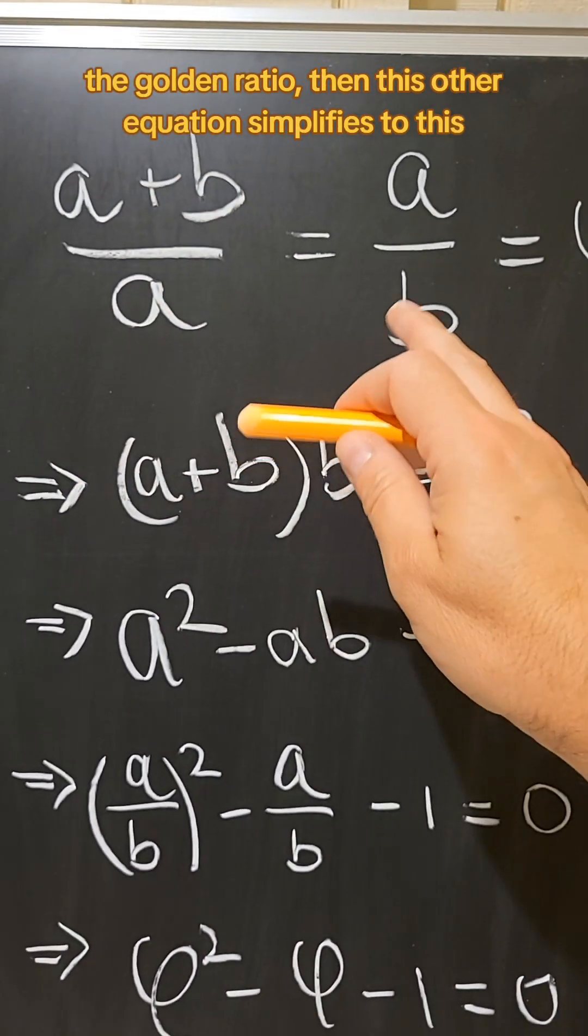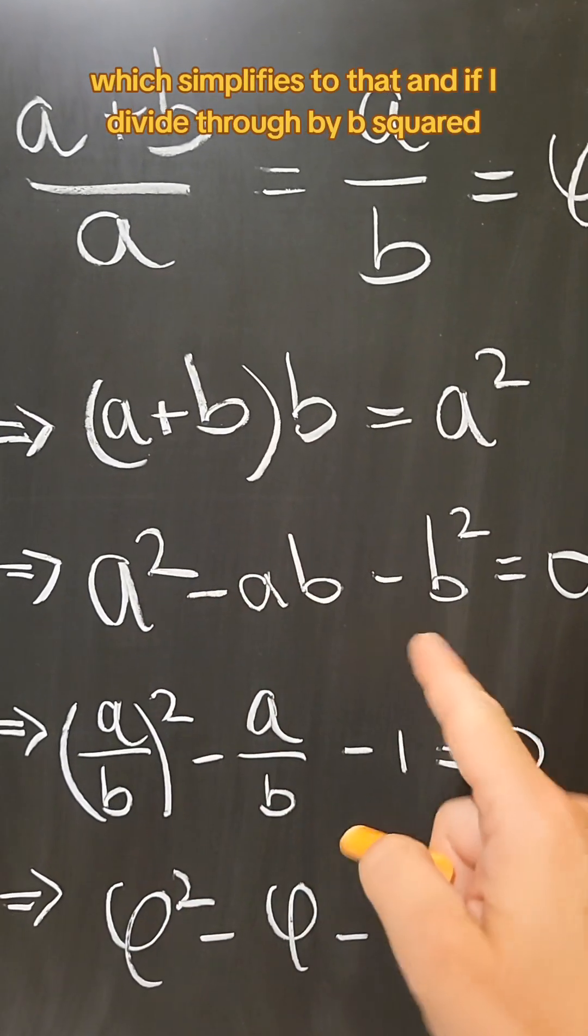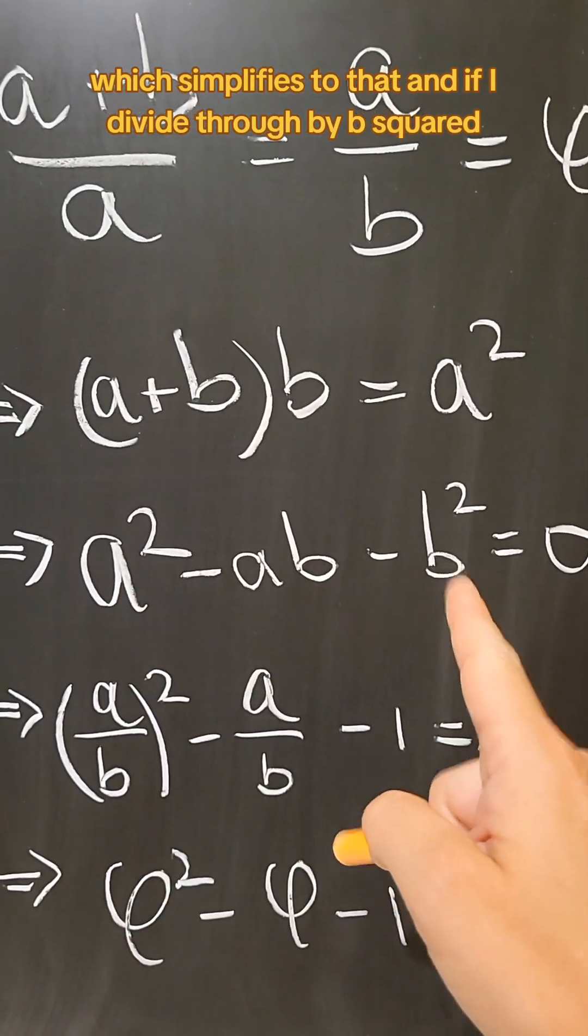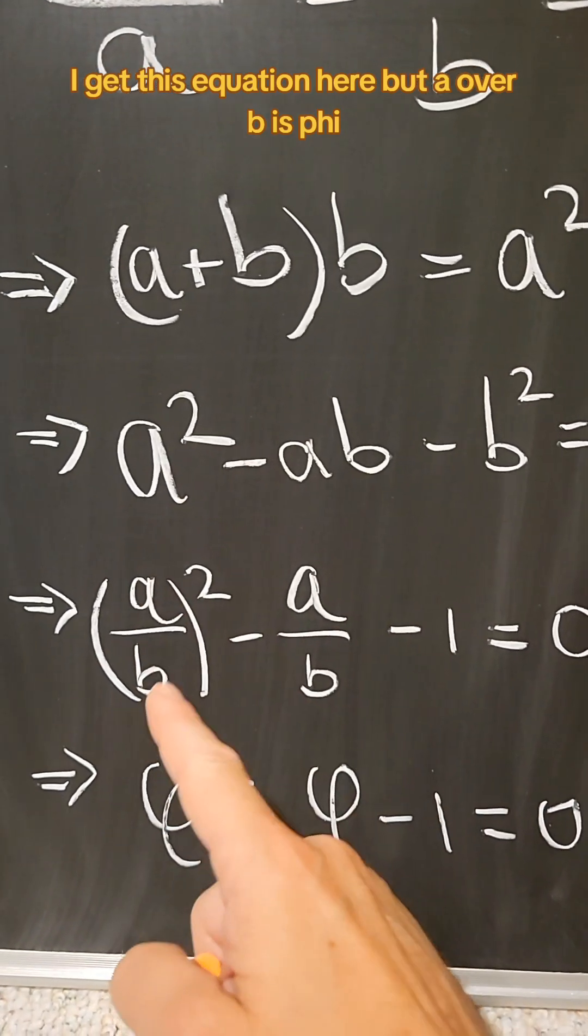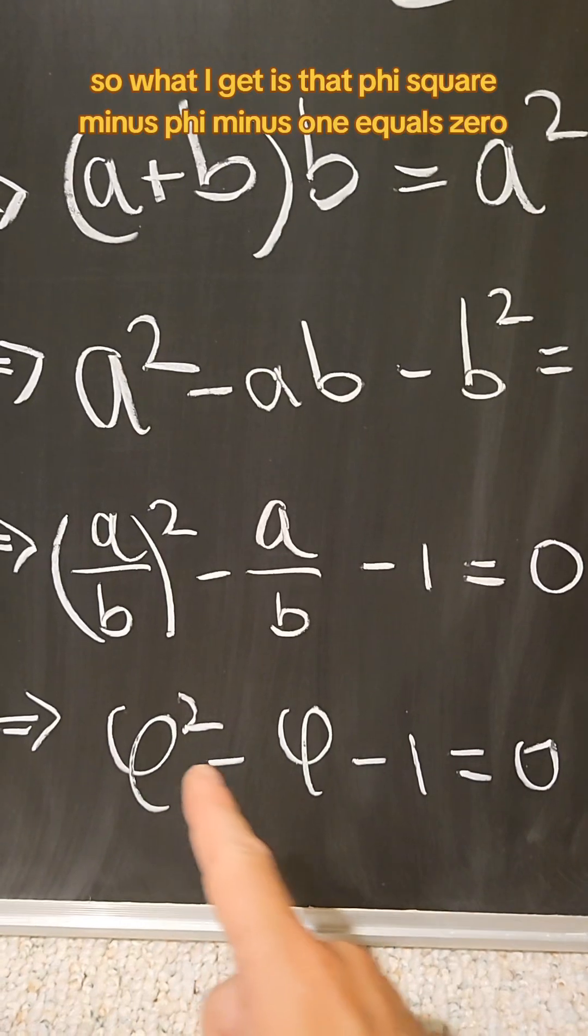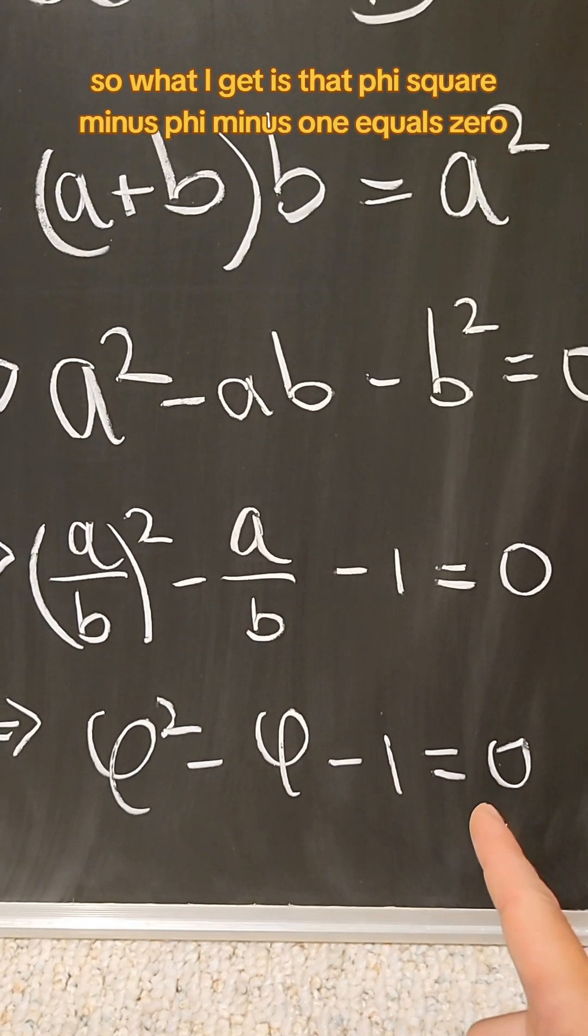then this other equation simplifies to this, which simplifies to that. And if I divide through by B squared, I get this equation here. But A over B is phi, so what I get is that phi squared minus phi minus 1 equals 0.